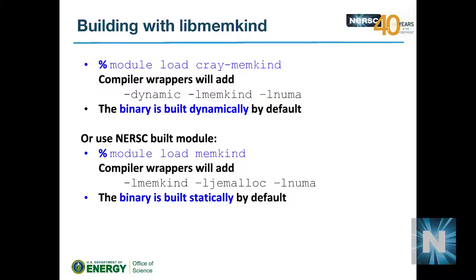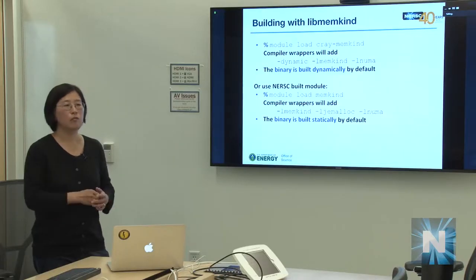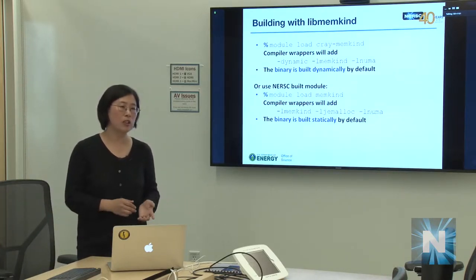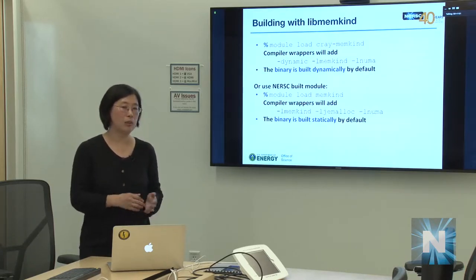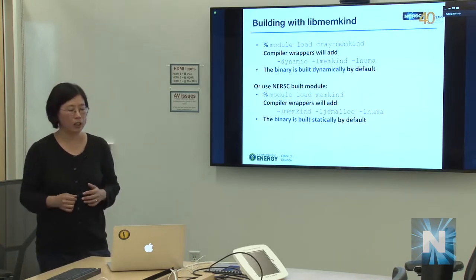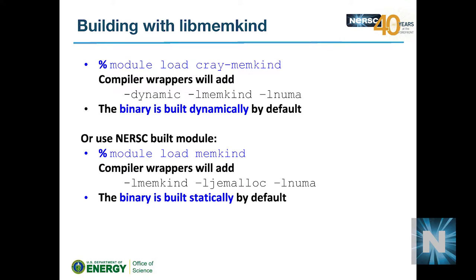To compile with libmemkind support, there are two options. Load the 'cray-memkind' module and use the FTN/CC wrappers — this adds dynamic linking flags, producing a dynamically linked binary. If you prefer a static binary (the default), NERSC provides a 'memkind' module that links with memkind and jemalloc without the '-dynamic' flag.